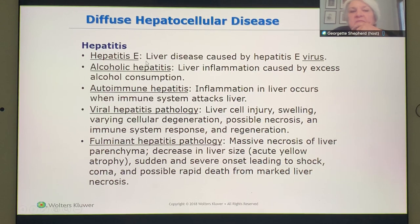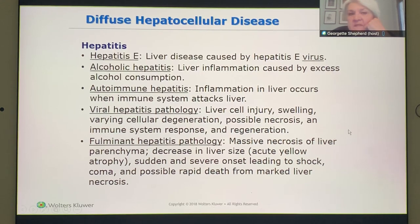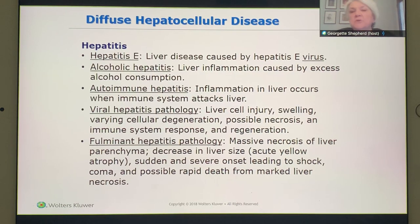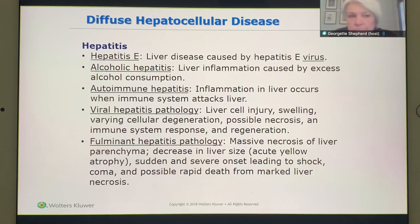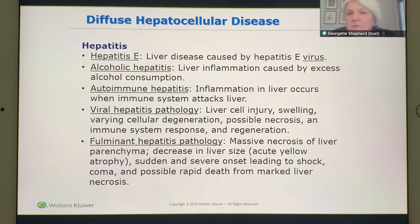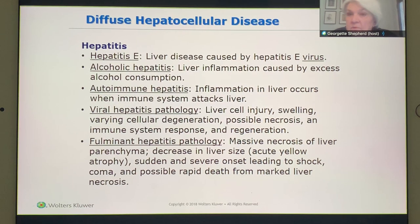Each one of these has its own hepatitis E virus, hepatitis D virus. Alcoholic hepatitis is caused from alcohol consumption. On your requisitions, you're going to see ETOH abuse — that means you have an alcoholic that you're going to be treating. Autoimmune hepatitis: if the autoimmune system attacks the liver, then you have autoimmune hepatitis.